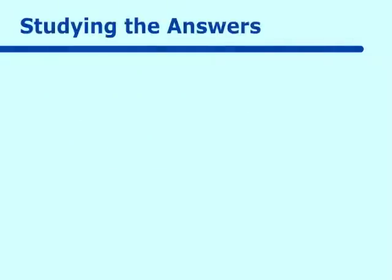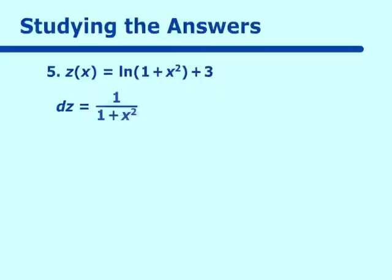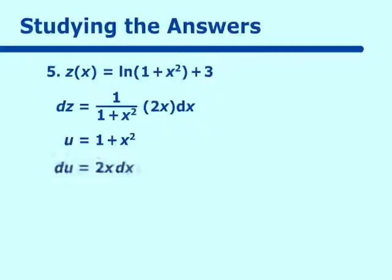Our last example is z of x equals ln of 1 plus x squared plus 3. If we take the dz of this, we get 1 over 1 plus x squared, times the derivative of 1 plus x squared, which is 2x dx. In this case, our u is equal to 1 plus x squared, and our du is equal to 2x dx. As we do these, we have to think in this u du form.